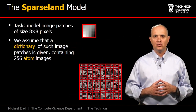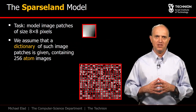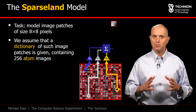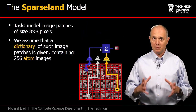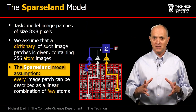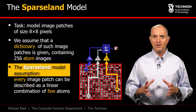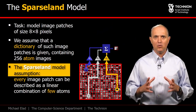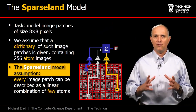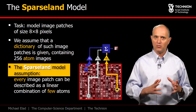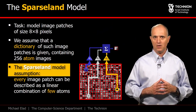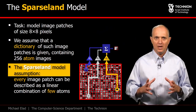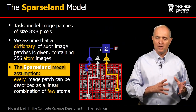In this example, there are 256 atoms. And now comes the Sparsland model assumption, which states that every input patch can be described as a linear combination of a few atoms from the dictionary. I'm emphasizing the word 'few' as it is central in our story.